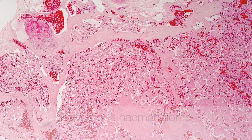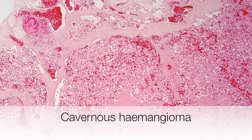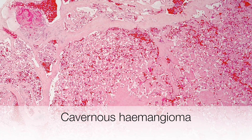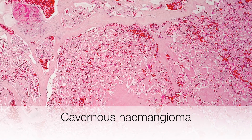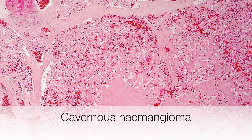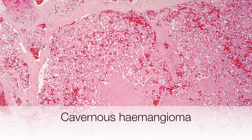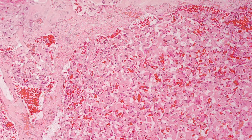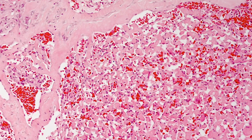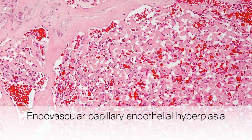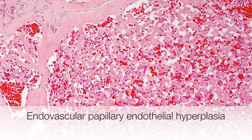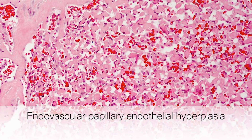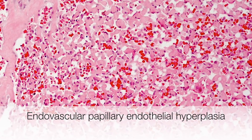This is an example of endovascular papillary endothelial hyperplasia that has arisen within a cavernous haemangioma. Hyaline papillary structures can be seen within the cavernous spaces.